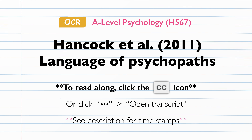Evaluations: The study was a quasi-experiment since the independent variable — whether the participants were rated as a psychopath — was not manipulated. This meant that there was less control by the researchers, which made the study more ecologically valid. However, since psychopaths represent only around 1% of the population and the sample size of the main experimental group was only 14, it may not be considered representative of the general population. The participants were also all-male, which makes the results difficult to generalise to females within the prison population.